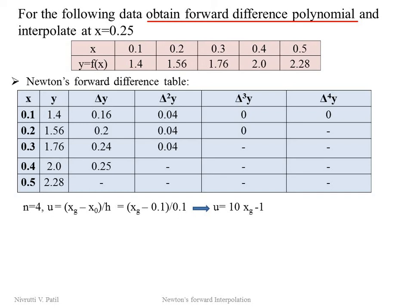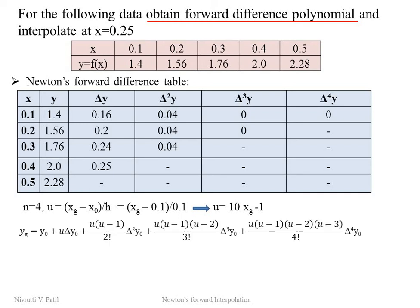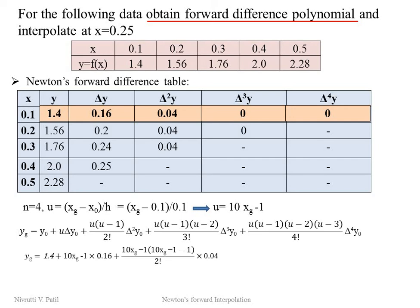We write the yg formula up to the (n−1)th, that is the third, forward difference operator. Substituting the first-row values and h, the formula becomes: yg = 1.4 + (10xg − 1)·0.60 + further terms using Δ²y0. The third- and fourth-order differences are zero, so those terms vanish. Simplifying yields the polynomial: yg = 2xg² + xg + 1.28. When the problem asks for the polynomial, always express u in terms of xg first.